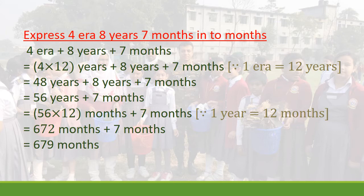Next line: 4 × 12 = 48 years, plus 8 years, plus 7 months. The first two parts are both in years, so we add them: 48 plus 8 equals 56 years, plus 7 months. Since these are different units, we multiply 56 years by 12 months, because 1 year equals 12 months.